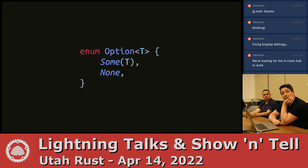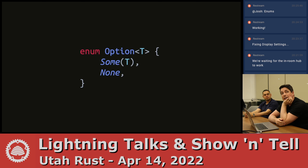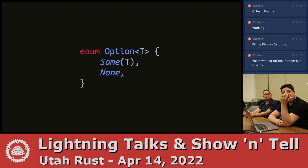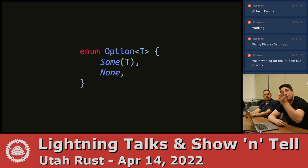There are some really common enums in the standard library that you use all the time: option and result. Whenever you're reaching for a null in a C-like language, you want to use an option in Rust, because you can't have null pointers in Rust. So instead you can have an option — it's either a none or it's a some variant that contains something.